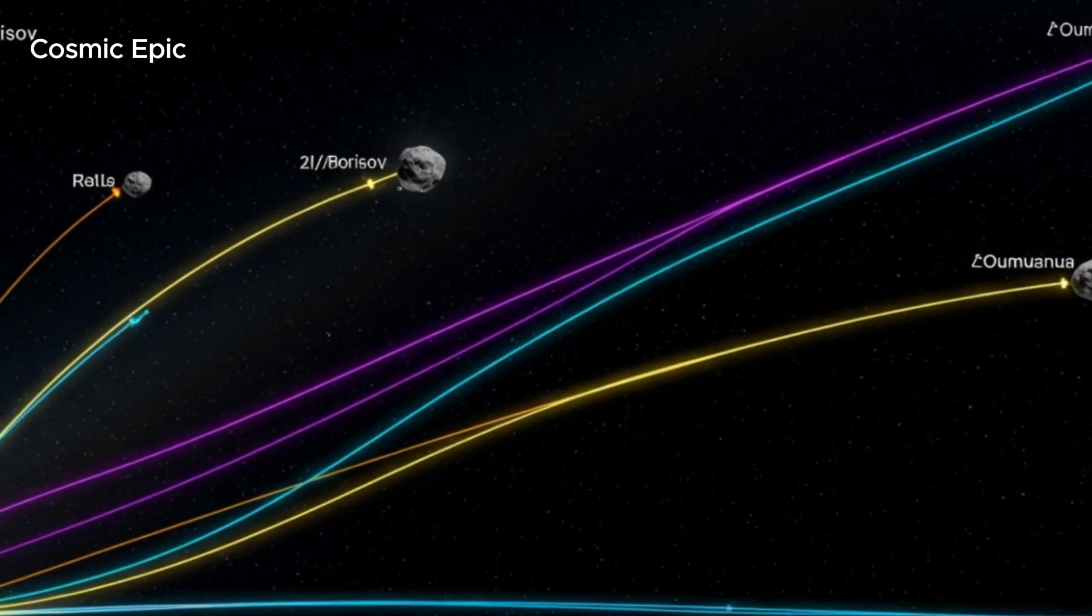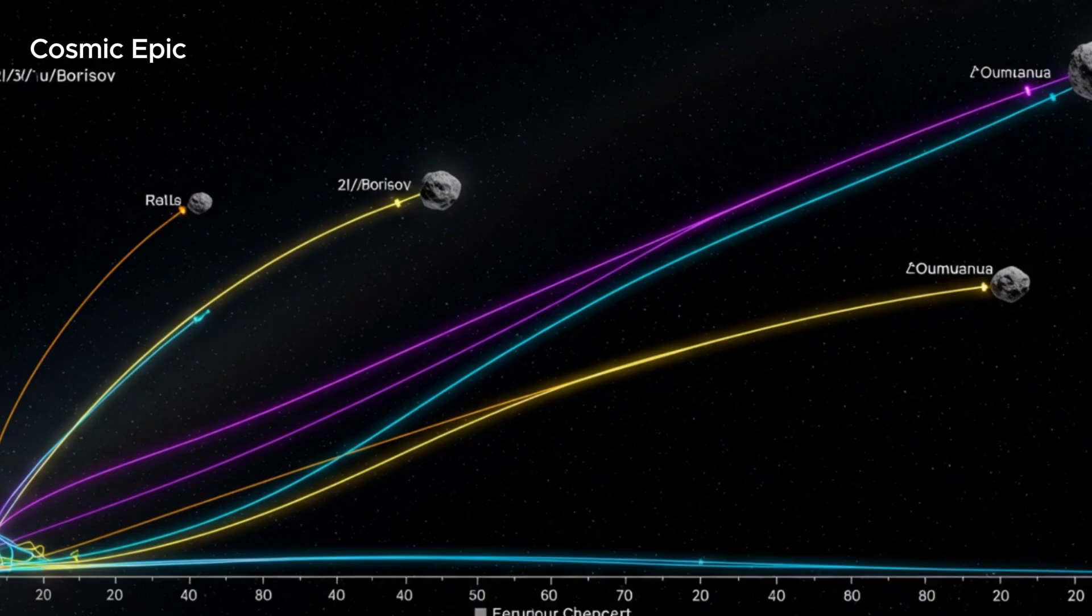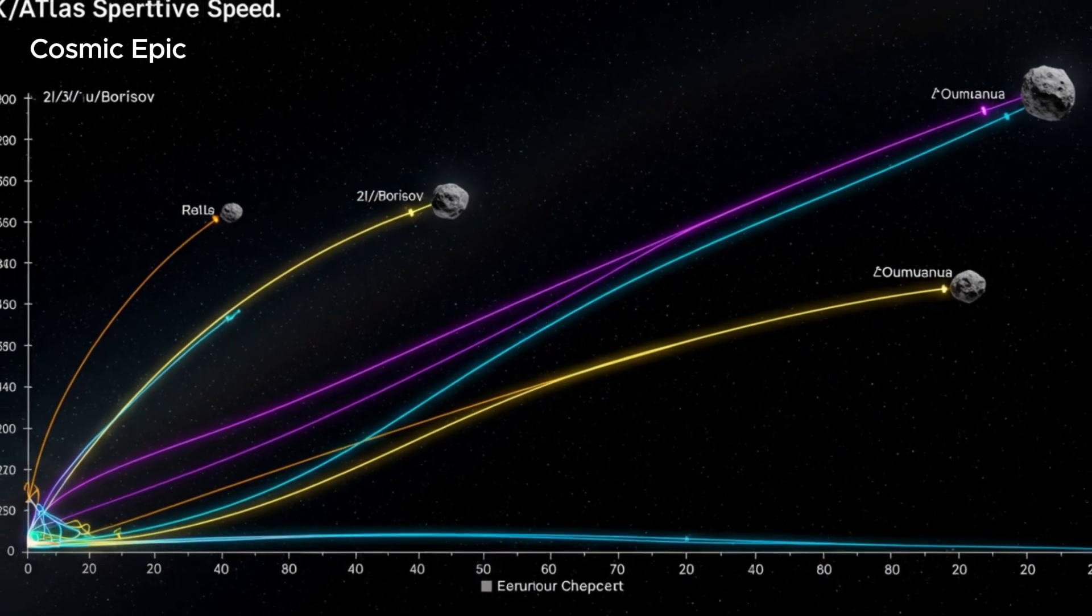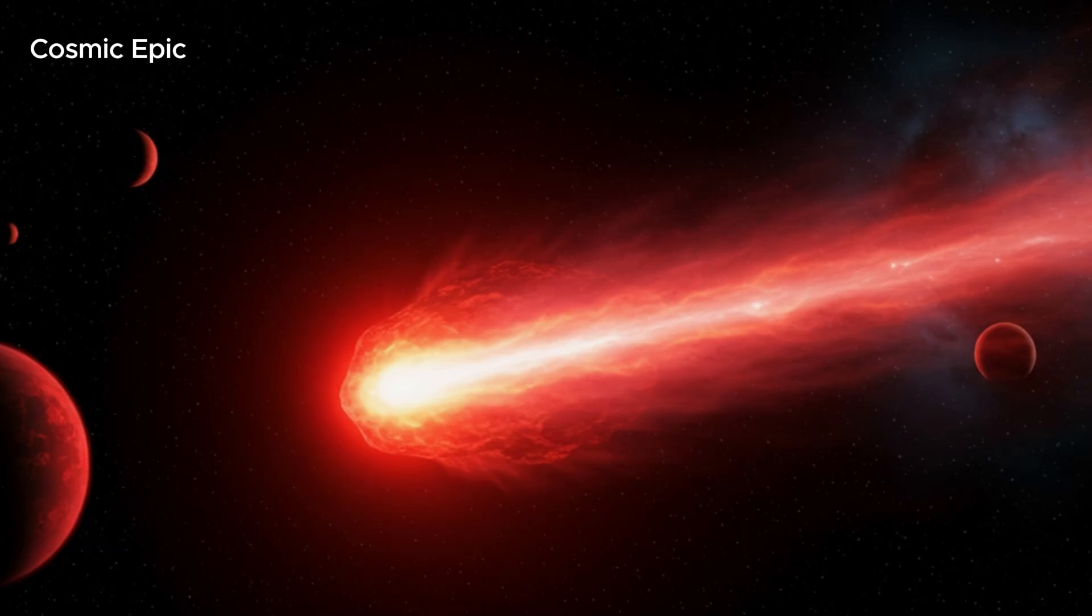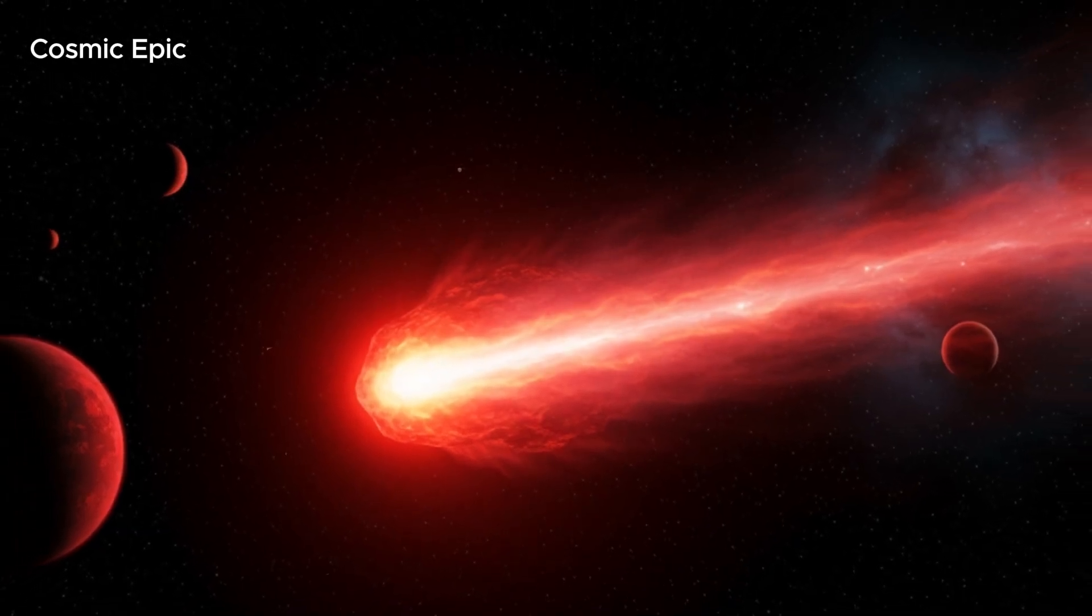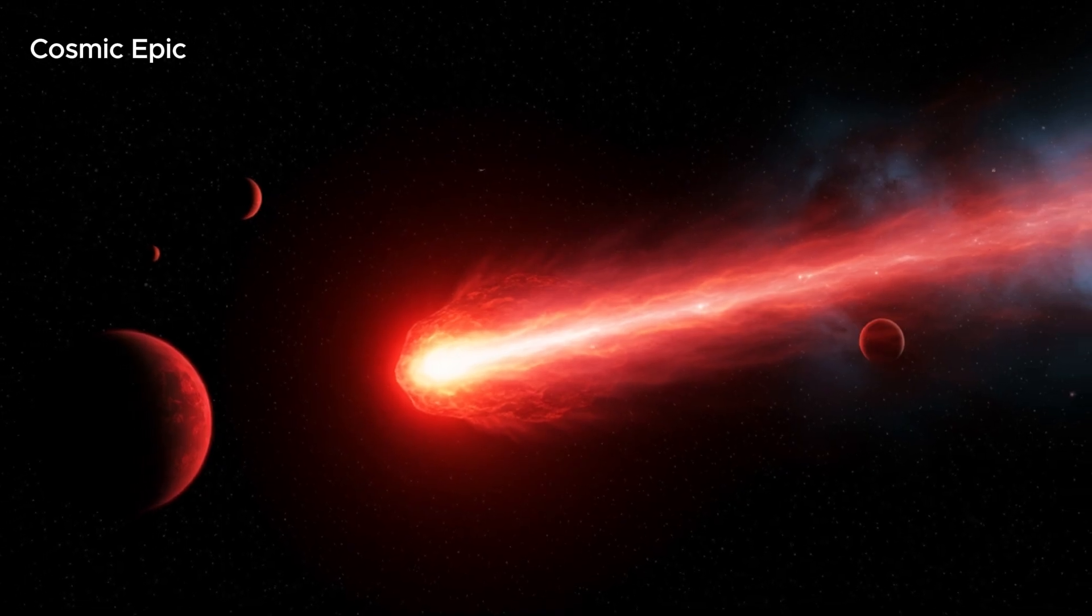Maybe these aren't just travelers. Maybe they're messengers or monitors, because if the data's right, 3i/Atlas shouldn't even be here. And yet it is, perfectly timed, precisely angled, moving faster than anything we've ever seen.